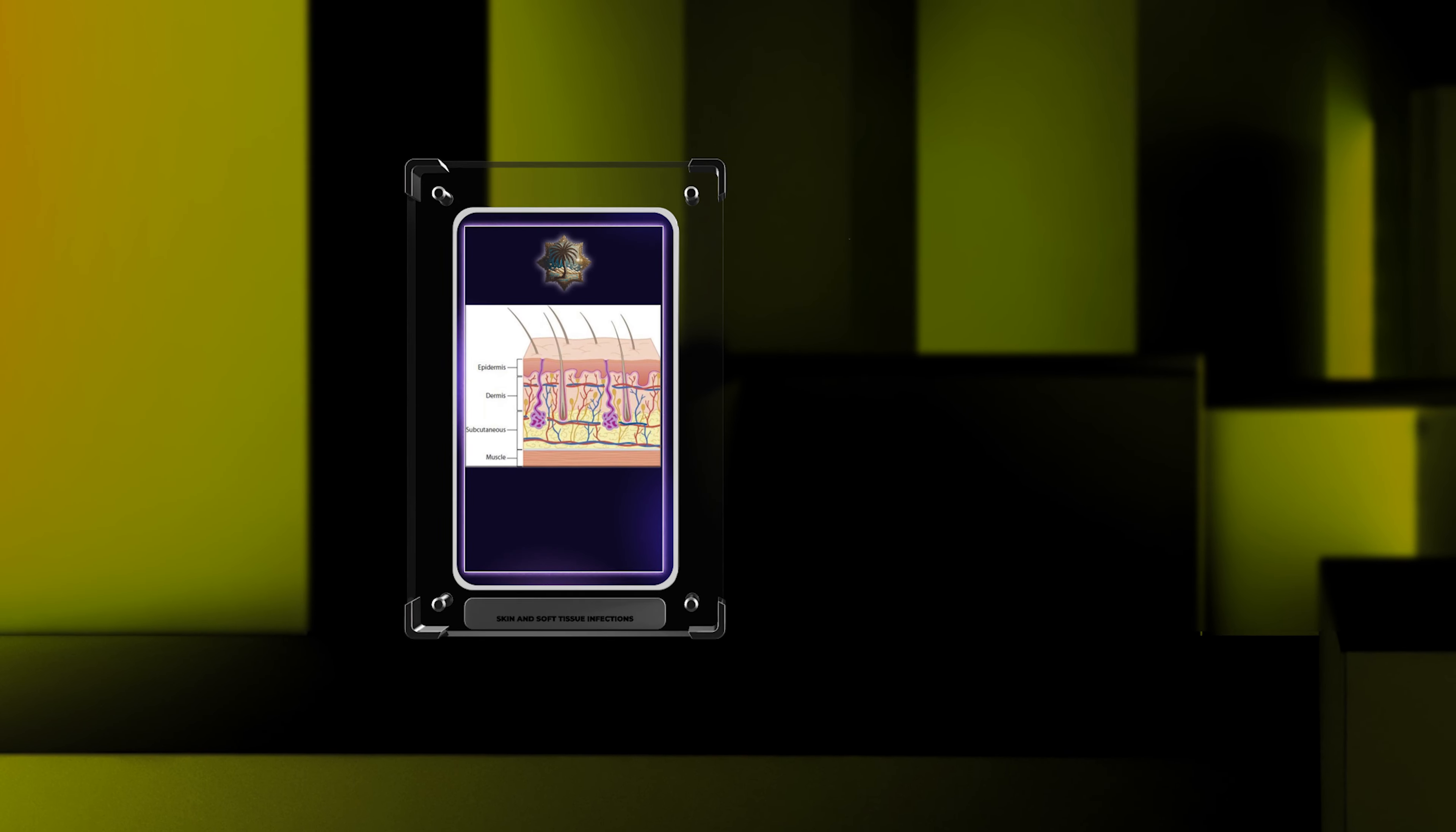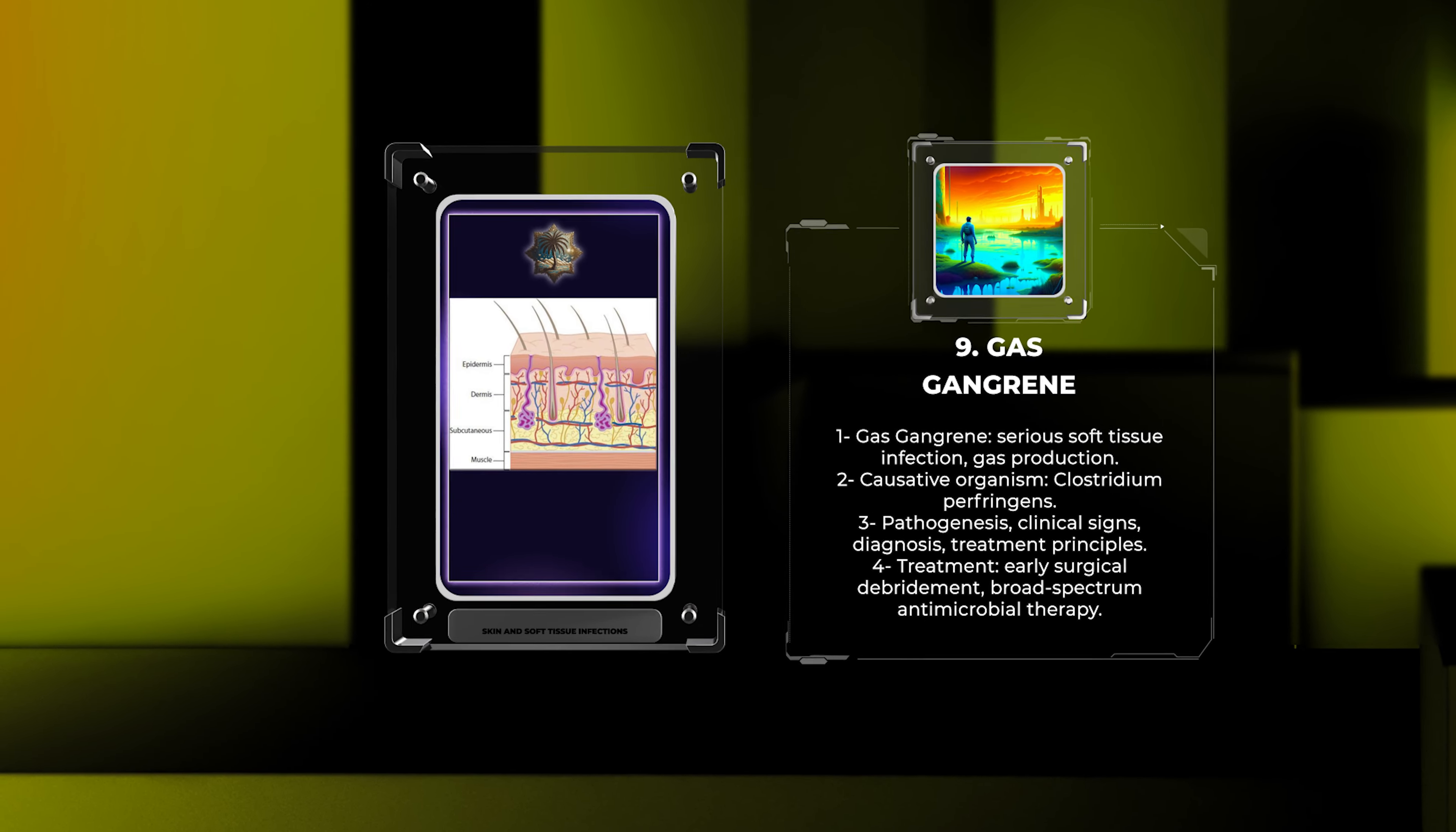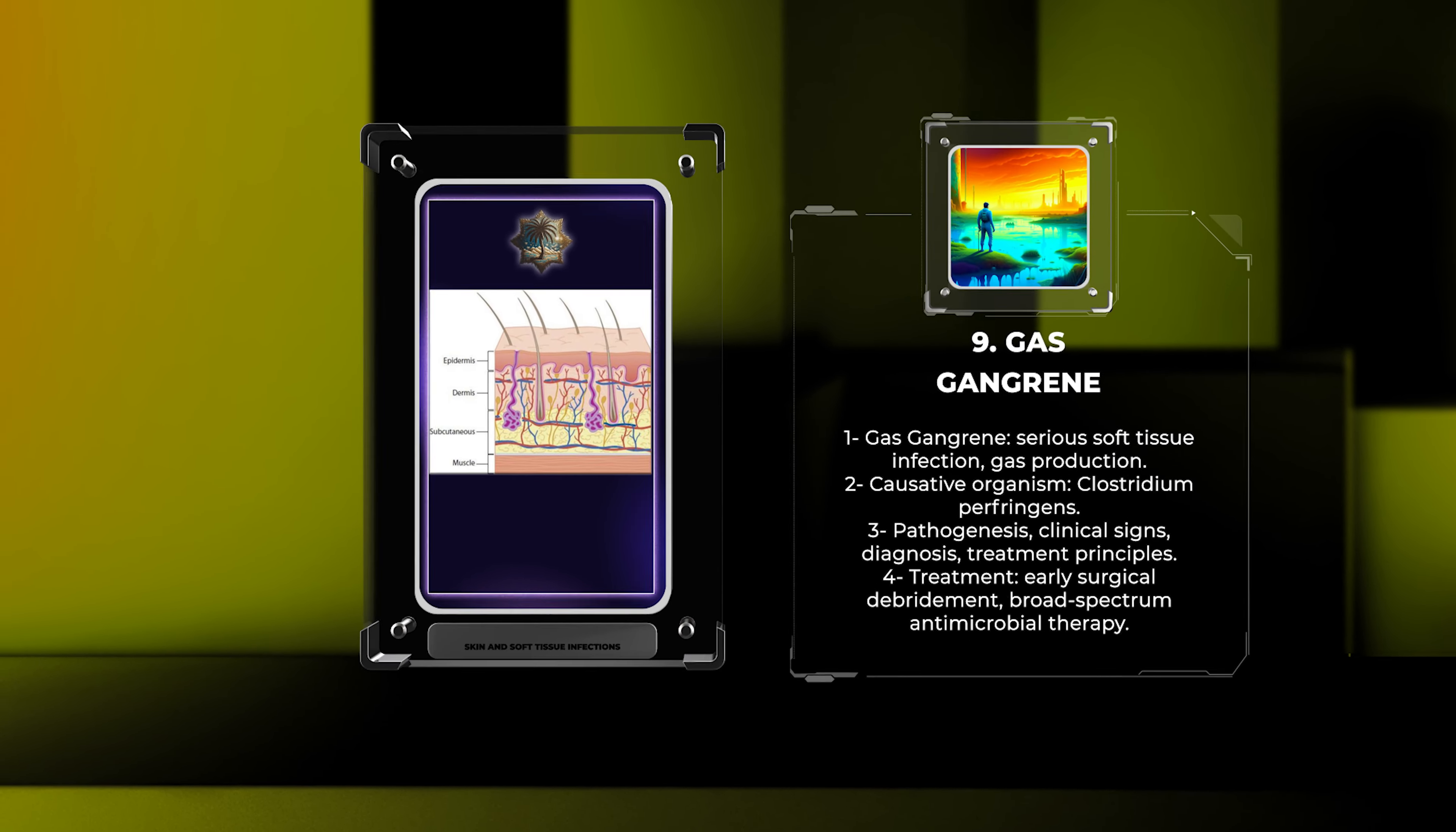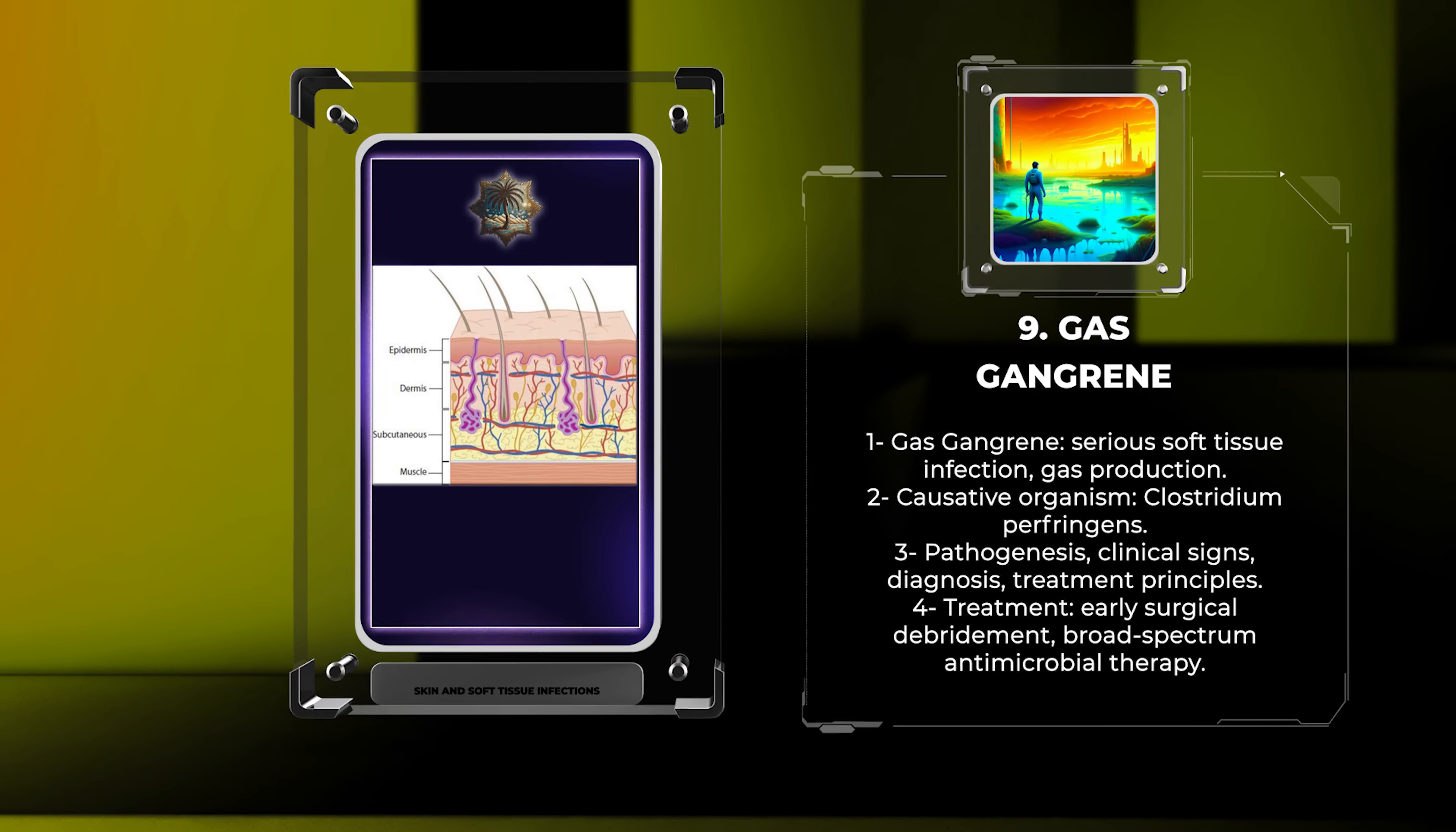Gas gangrene, or clostridium myonecrosis, is a serious soft tissue infection with gas production in tissues. This topic focuses on understanding the causative organism, clostridium perfringens, pathogenesis,